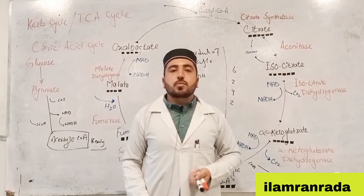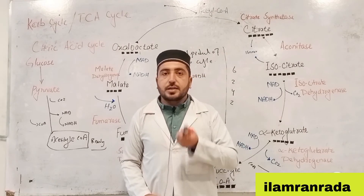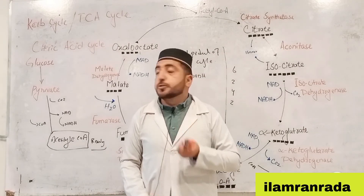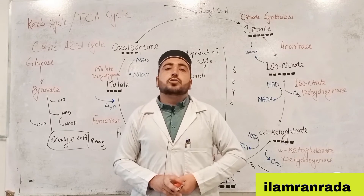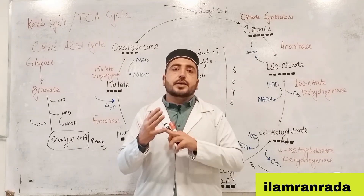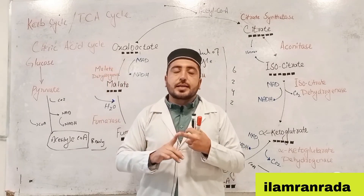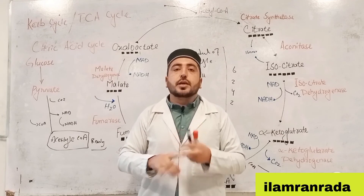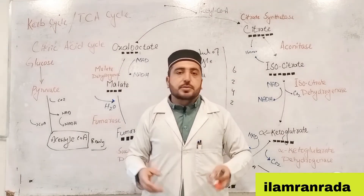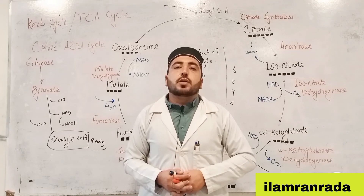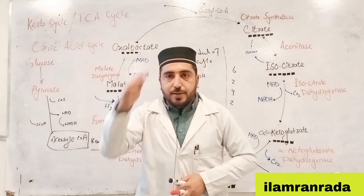The next topic is the electron transport chain. Cellular respiration consists of three stages: glycolysis, the Krebs cycle, and the electron transport chain. Students, I hope this topic was clear — thank you very much.